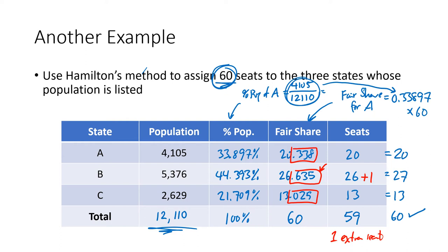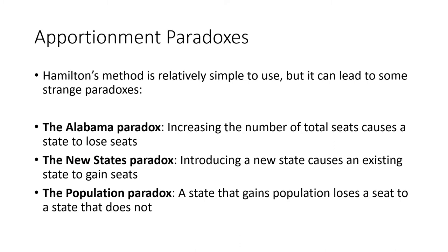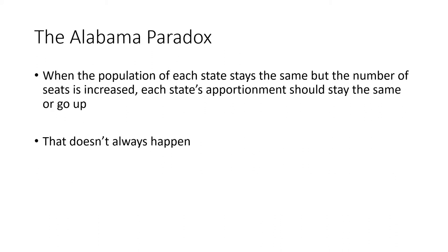There are a lot of steps and a lot of calculator work, but hopefully the process makes sense. Hamilton's method is pretty straightforward, but it can lead to some strange paradoxes. The Alabama paradox is when we increase the total number of seats but a state loses seats. The new states paradox is when adding a new state causes an existing state to gain seats. The population paradox is where a state gains population but loses a seat to a state that doesn't. We would think that if we just have extra seats to distribute, every state's number should stay the same or go up — but that doesn't always happen.